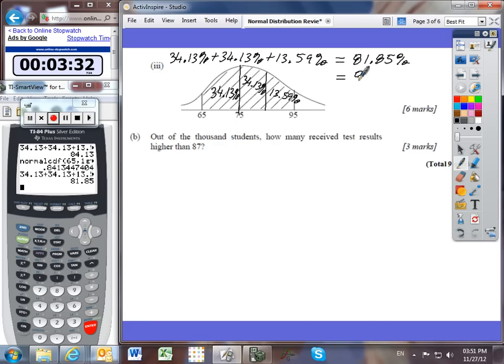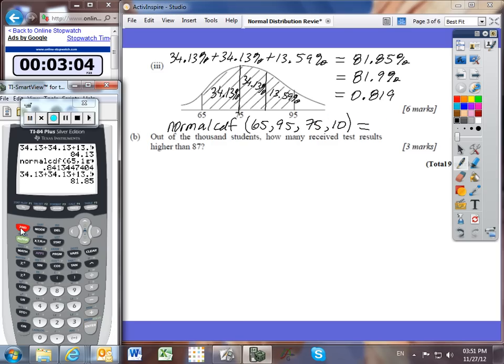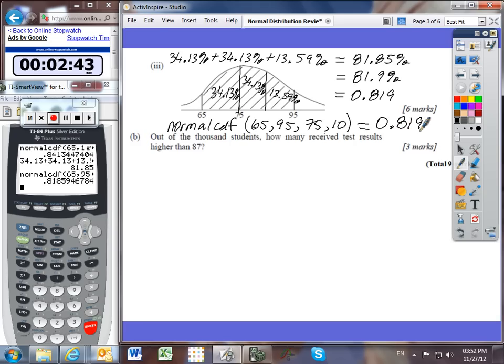And if I round that to 3 significant figures, I get 81.9%. And if I express that as a decimal, it's 0.819 to 3 decimal places. Another way you could have done it is using normal CDF. So we could have said normal CDF going from 65 up to 95, where our mean is 75 and our standard deviation is 10. Second vars normal CDF. My lower bound is 65, my upper bound is 95, my mean is 75, and my standard deviation is 10. And look, it gives you the exact same answer when you round to 3 significant figures of 0.819. So either method is available to you in this problem.